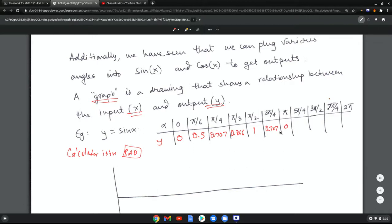5 pi divided by 4 is negative 0.707. Sine of 3 pi divided by 2 is negative 1. Then you have sine of 7 pi divided by 4, negative 0.707, and then back to 0.